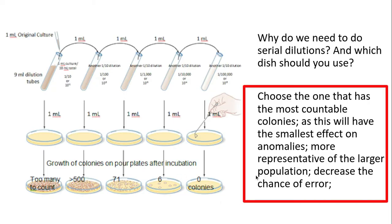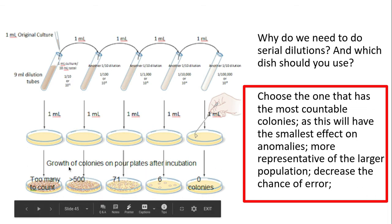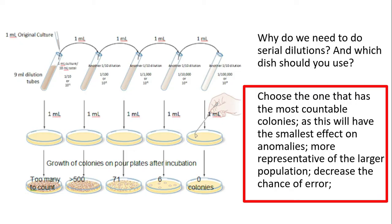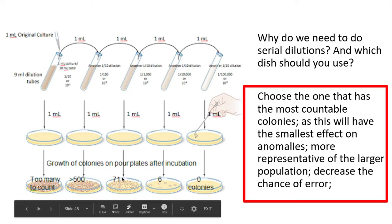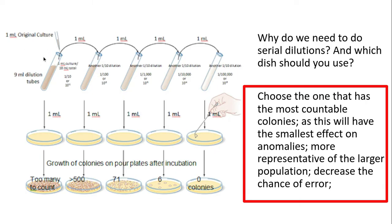This one is from the mark scheme. We need to choose the dish that contains the most countable colonies because this will have the smallest effects on anomalies and be more representative of the large population. For example, in this one I'd probably use the 71, and then I would multiply it back up by the dilution factor to find out how much is in the original population.